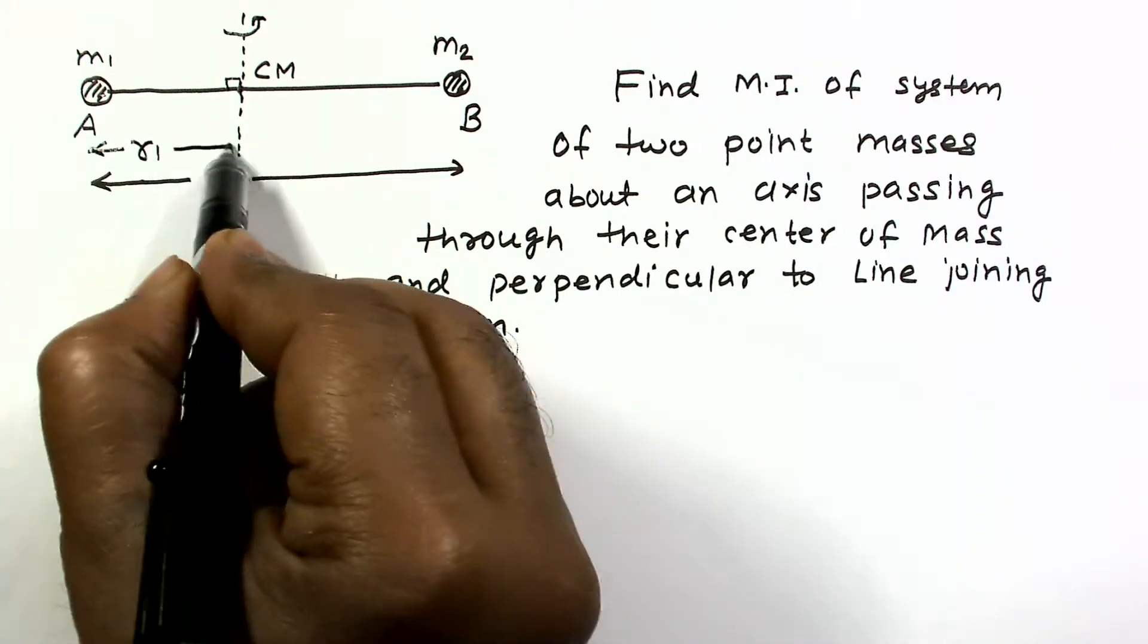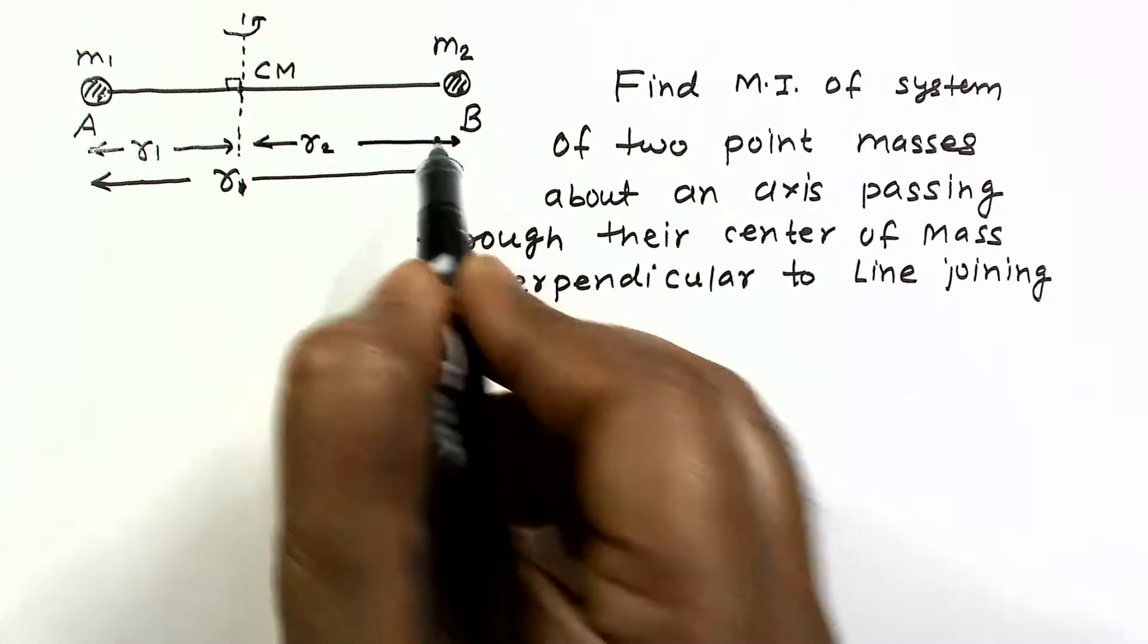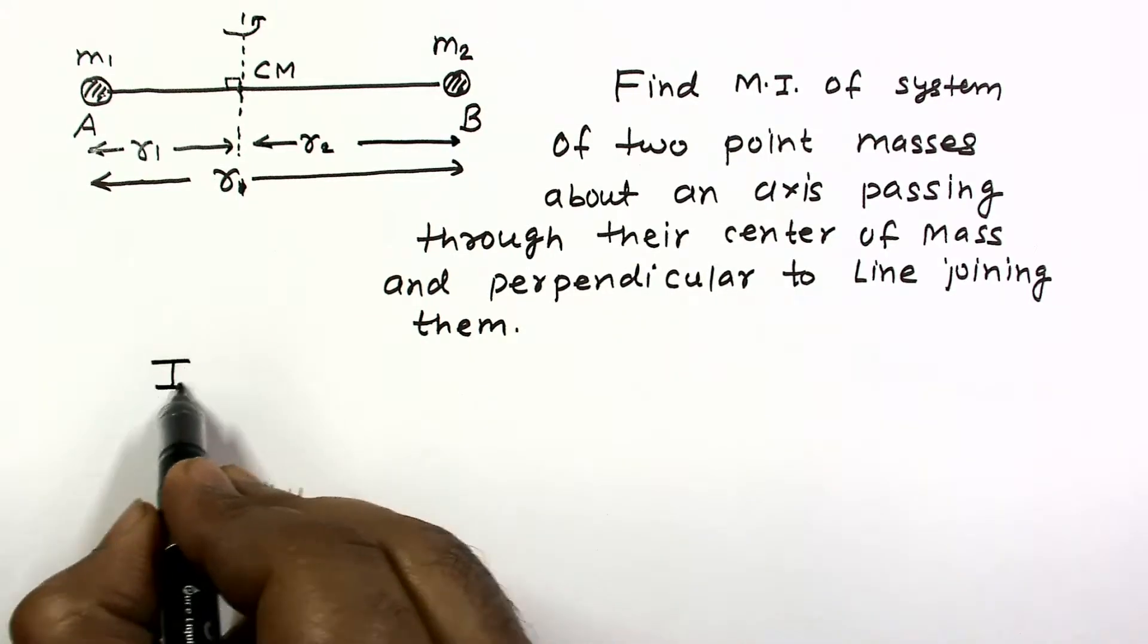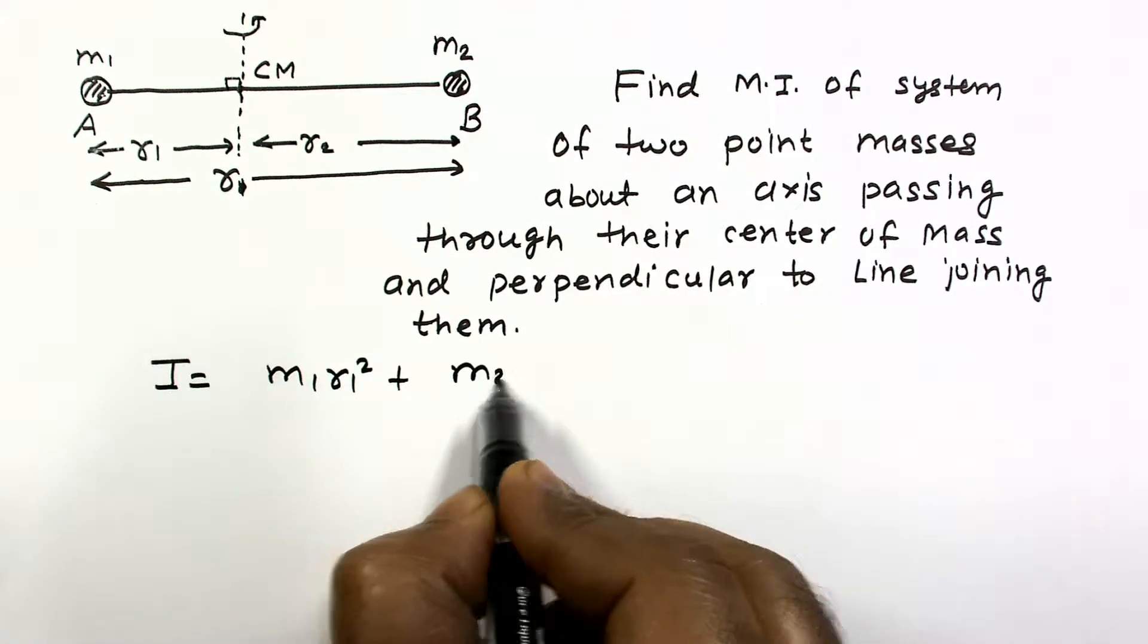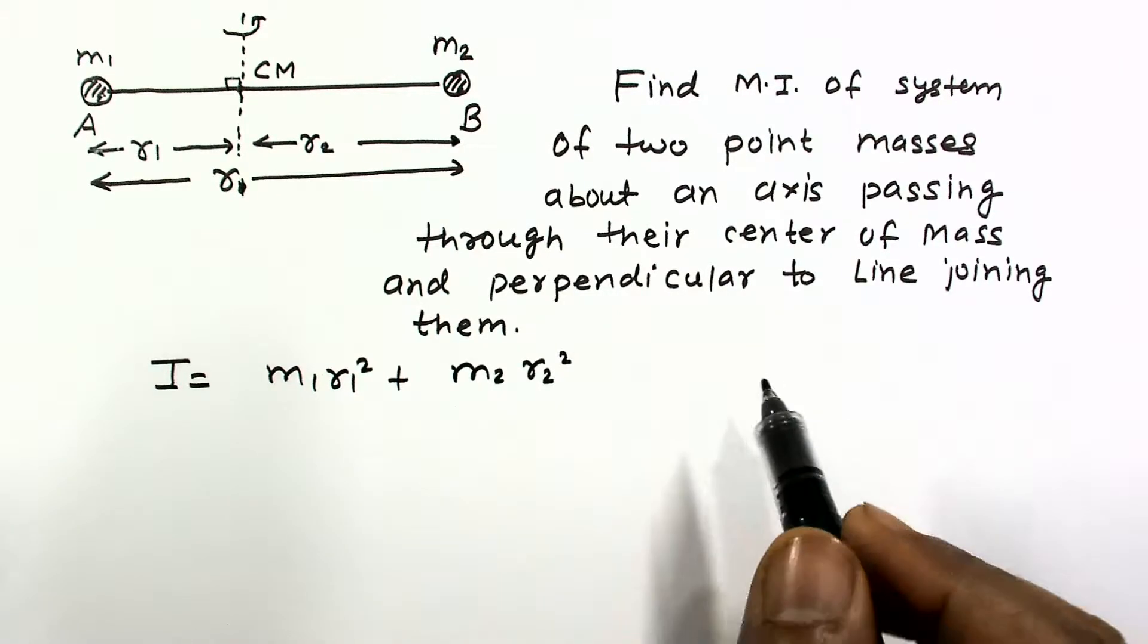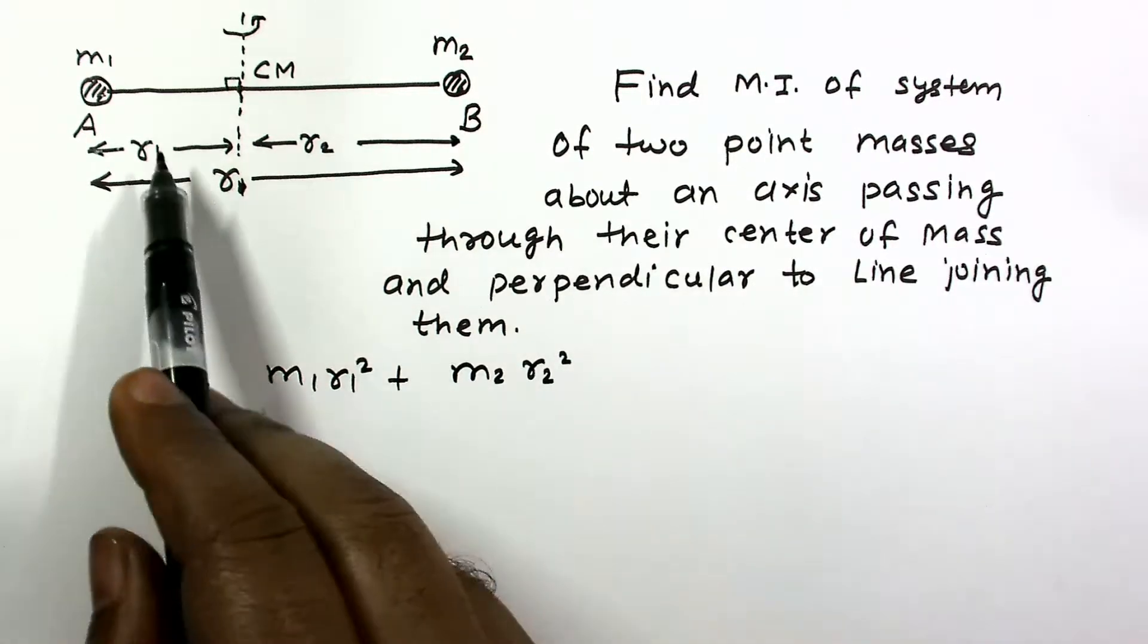So I assume this distance is R1 and suppose this distance is R2. The moment of inertia is M1 R1 square plus M2 R2 square, and now we need perpendicular distances.